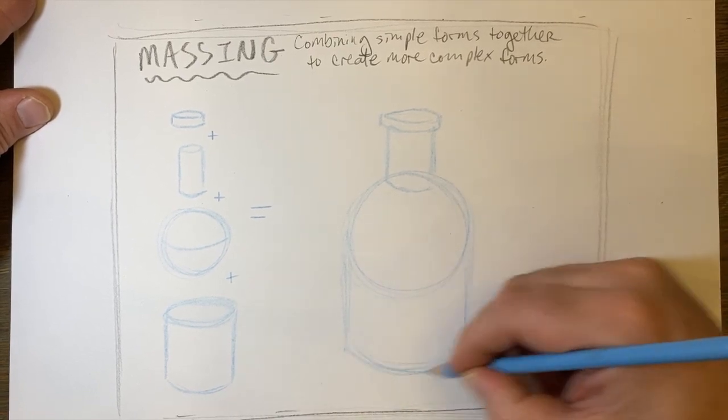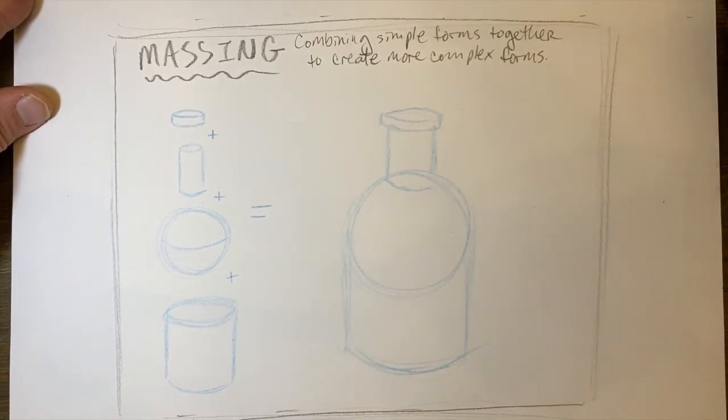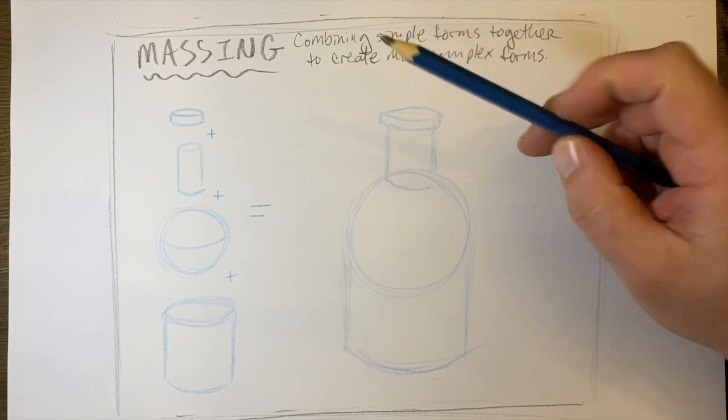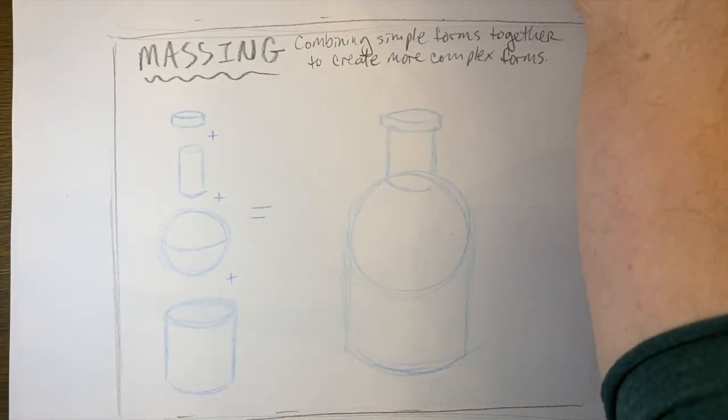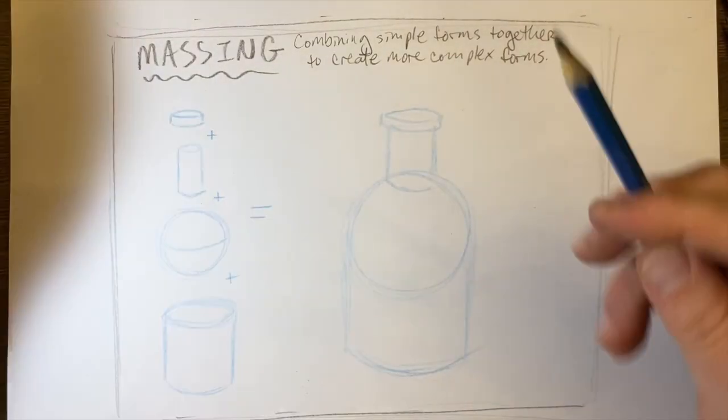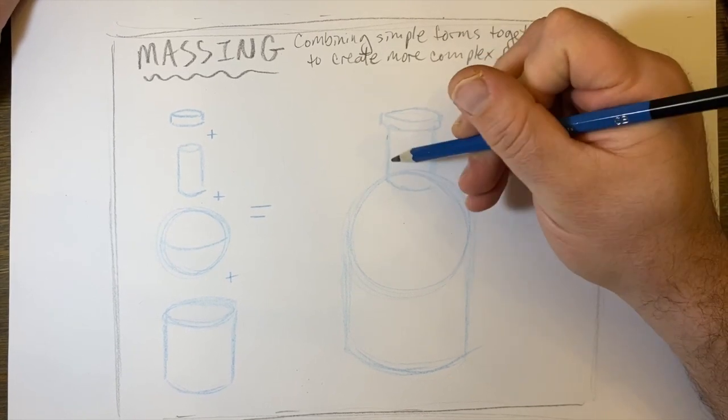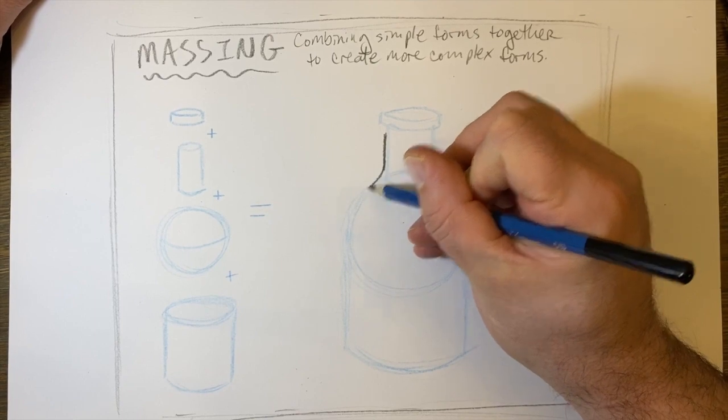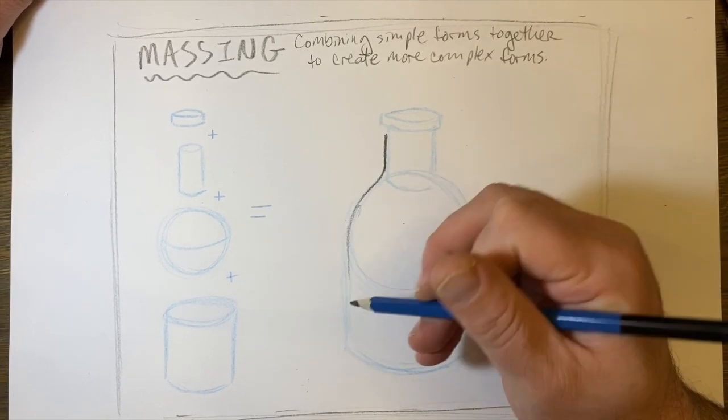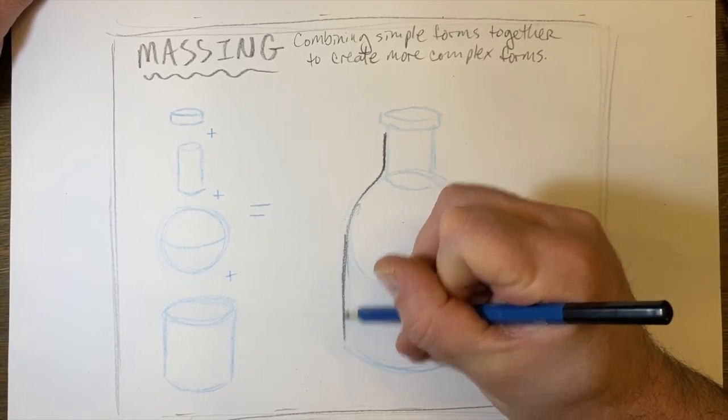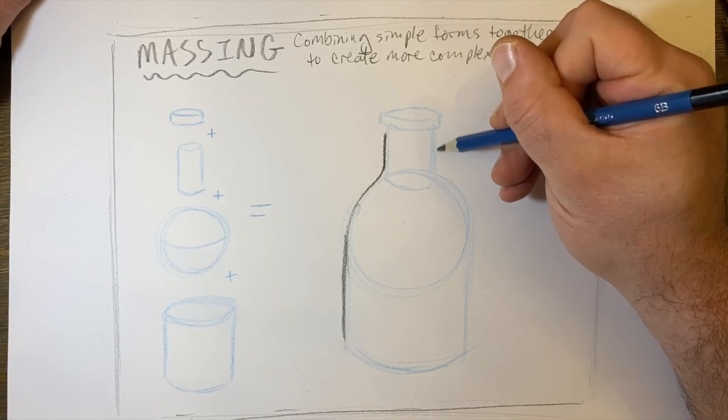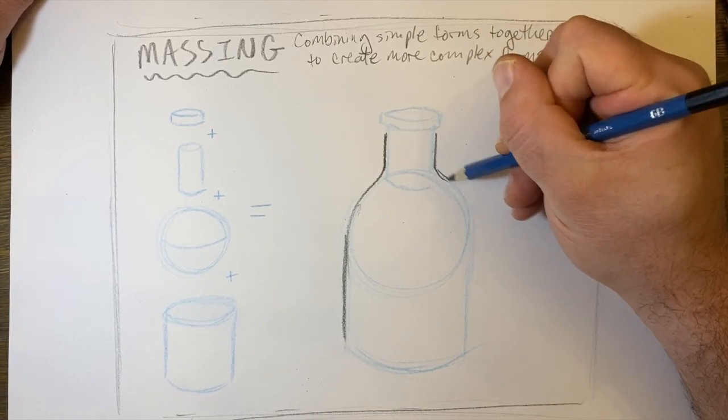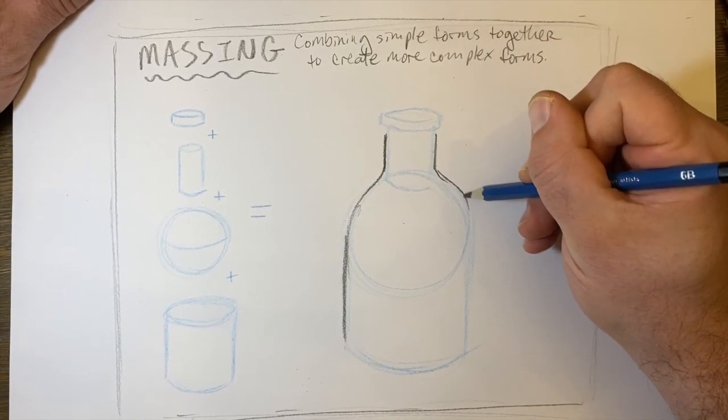All right. Next I will grab my 6B pencil, give it a quick sharpen, and I start defining the lines a little bit more. Here's where you'll smooth out some of the rougher edges. So I will curve my line from my cylinder of the mouth of the vase into the sphere.